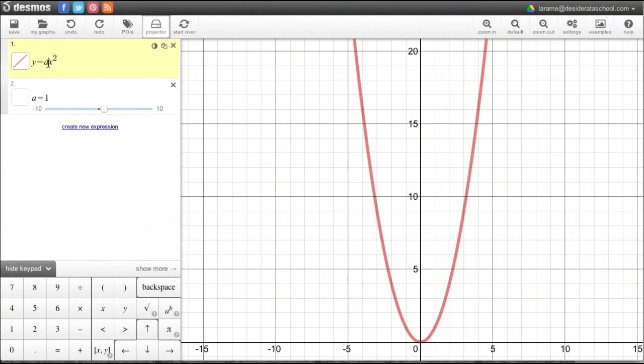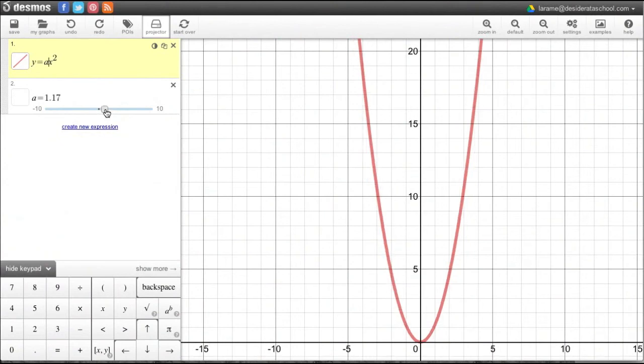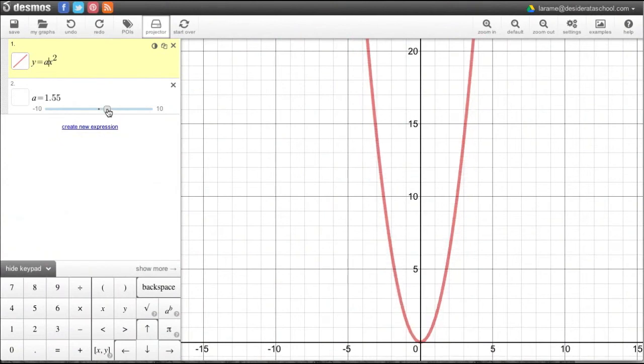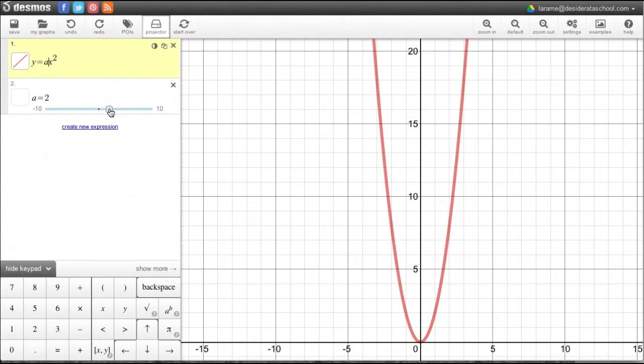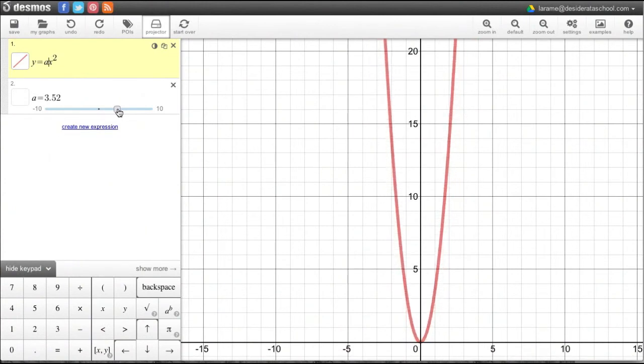And what that does is let me change the number that's in place of a. Now, by default, it's just 1, because 1x squared is just x squared. But as I increase that value, look what happens to the parabola. As this number gets bigger, the number before the x, you can see that the shape of the parabola gets narrower and narrower.